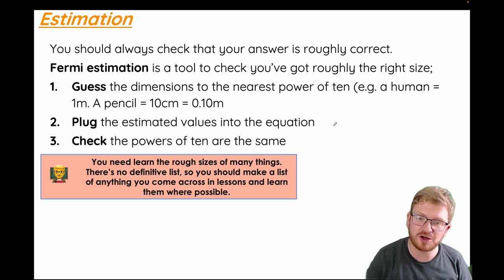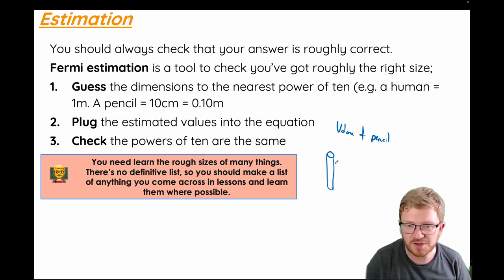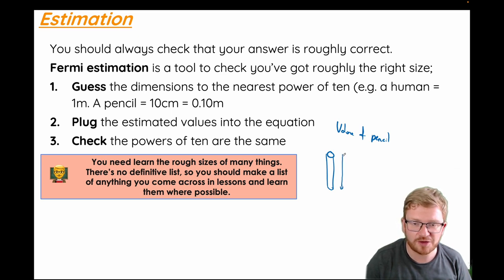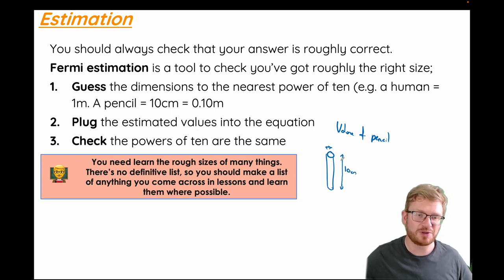For example, let's estimate the volume of a pencil. If I think about what a pencil looks like, I can model it as a cylinder. I need to know the length and the radius. The length of a pencil I'll say is ten centimetres — a metre-long pencil is crazy, and a one centimetre pencil is also crazy. We only need to go to the nearest power of ten.